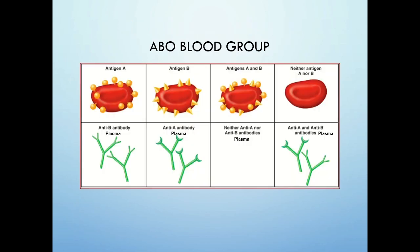A pictorial depiction shows a biconcave disc-shaped RBC. The antigens are depicted as identifying structural features on the surface. Antigen A and antigen B are shown on the surface; in AB both are present, and in O neither is present.